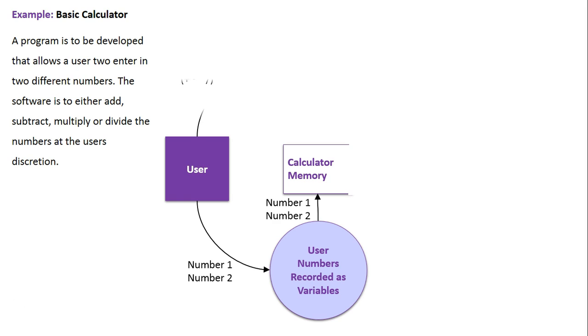The next step, we need to say which calculation the user wants to use. Once again, this needs to be recorded in the memory. Now we have the numbers stored and the calculation both stored in the memory.